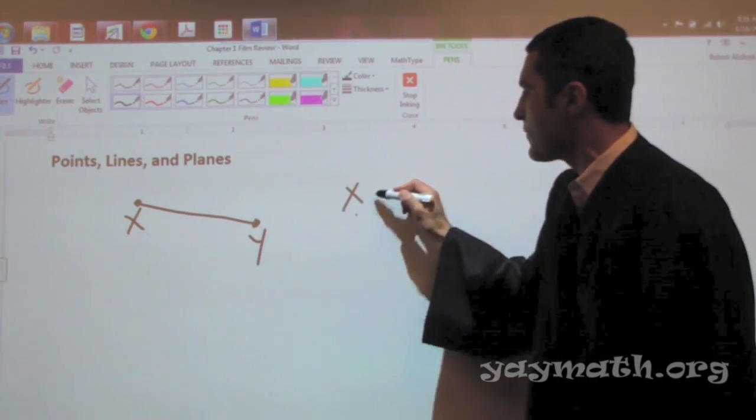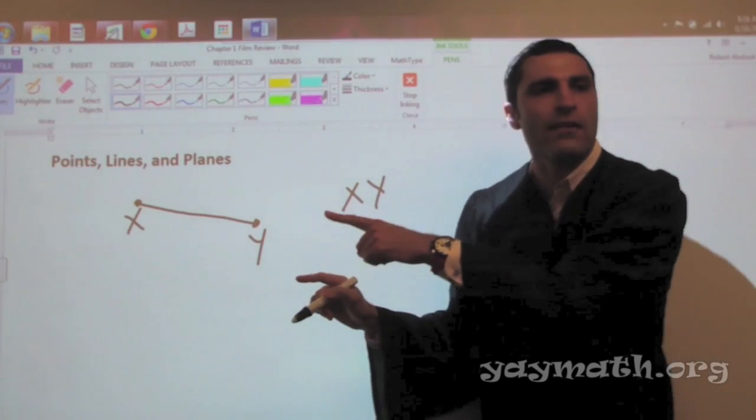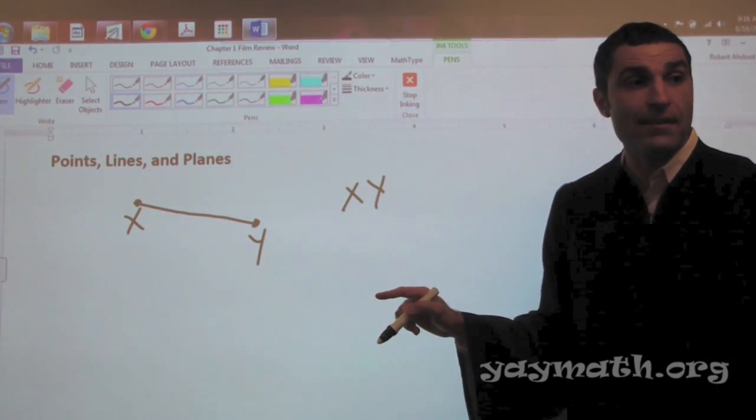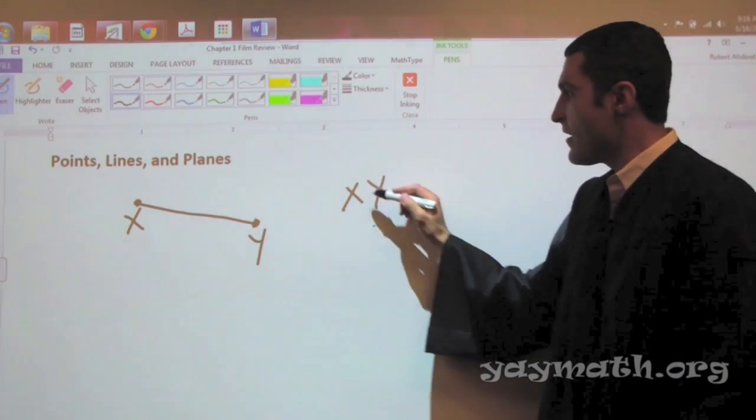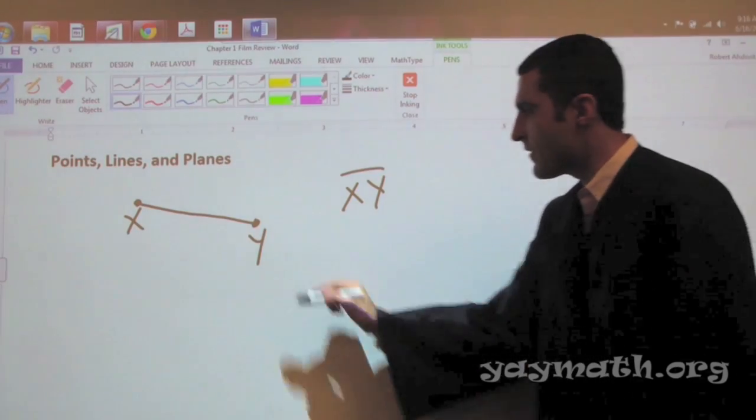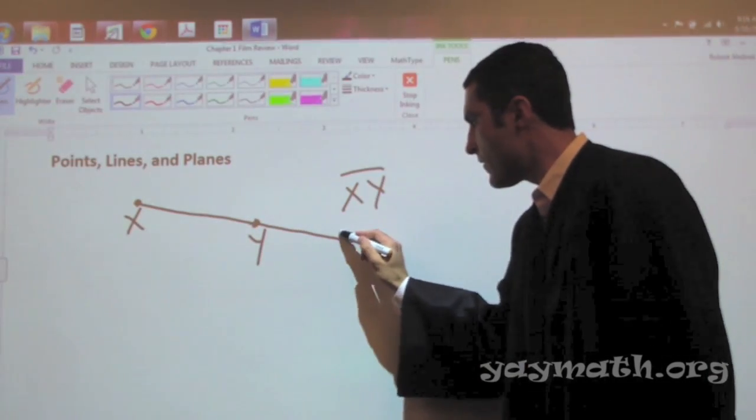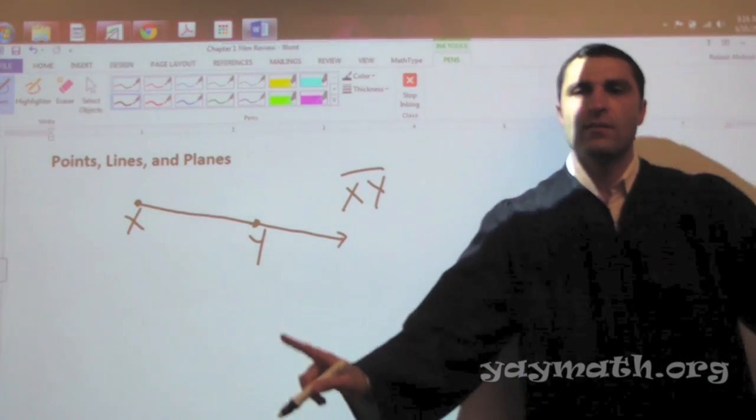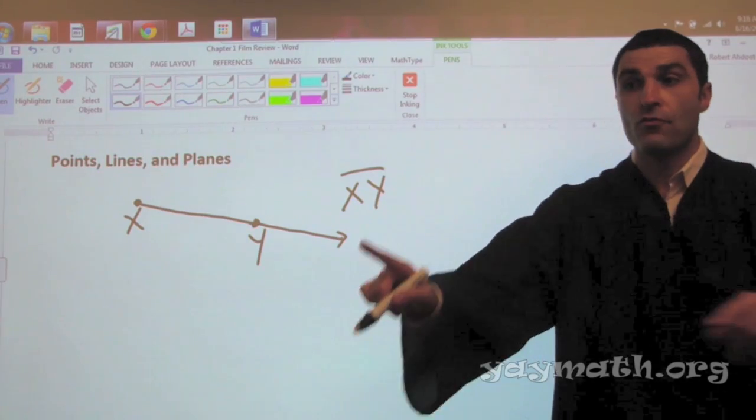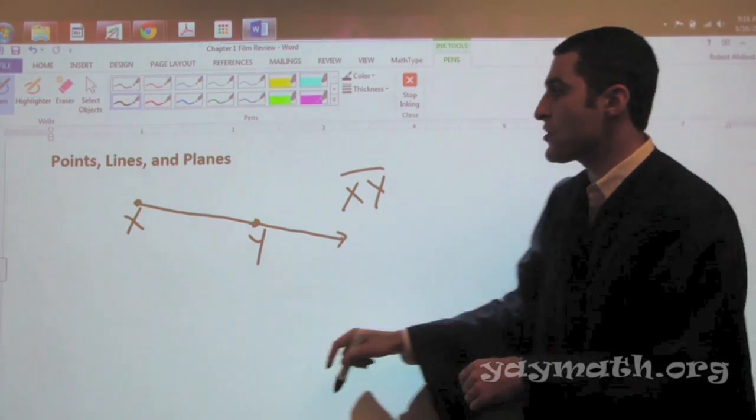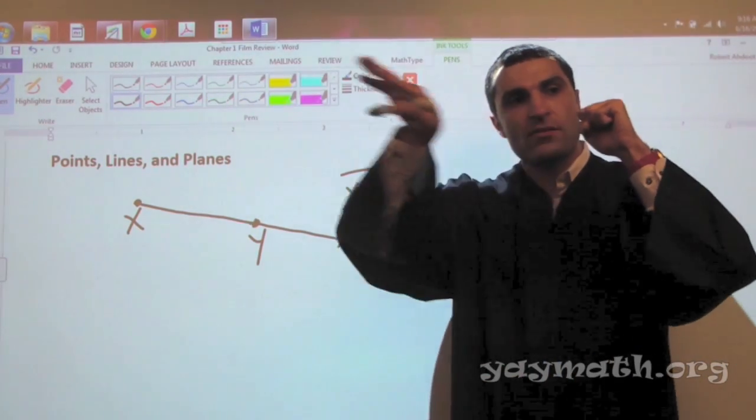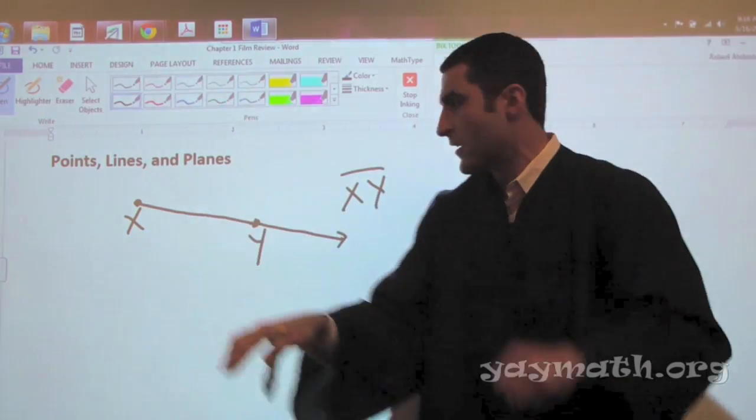Now, what's this called? Right here. What did I just make? Anyone? A line segment XY. A segment, right? You feel comfortable with that? Yeah. Segment. What's that? A line. A ray. Ray, a ray. Very good. Definition of ray starts at a point and goes on forever in one direction. Very good.